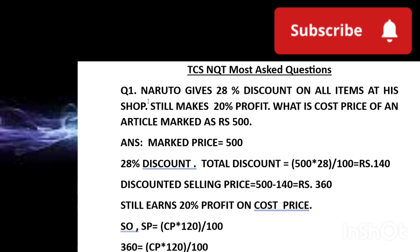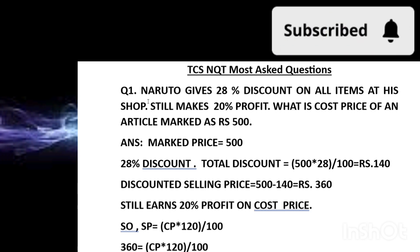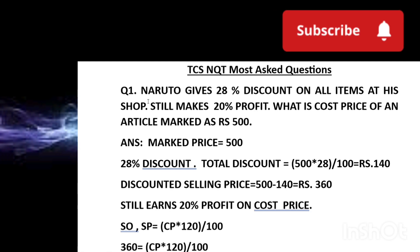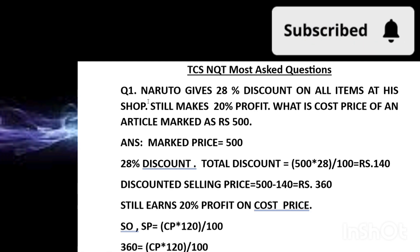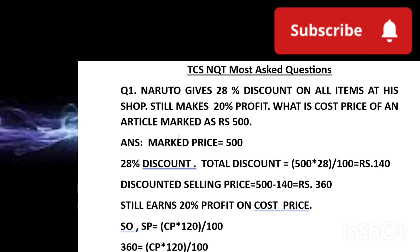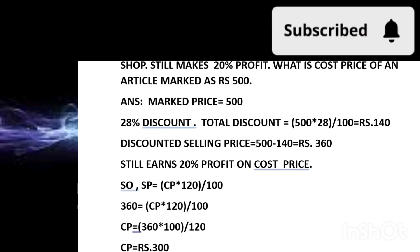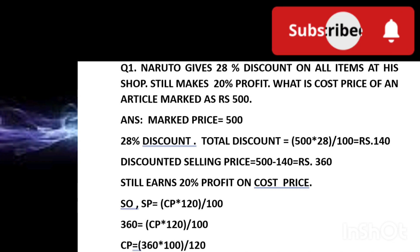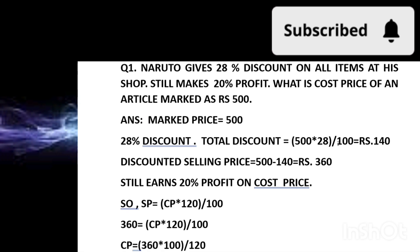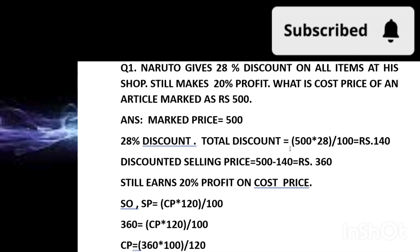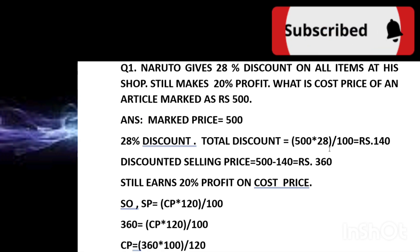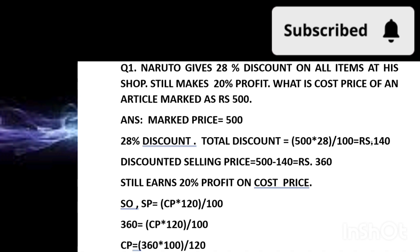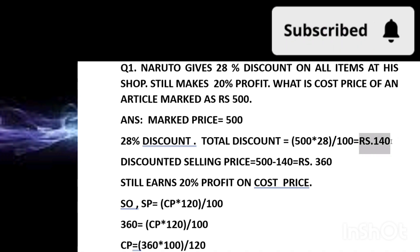Discount is calculated on marked price and profit is always calculated on cost price — remember these. The question asks: what is the cost price of an article marked at rupees 500? So the marked price is 500. There is a 28% discount on marked price, so total discount = 28% of 500 = 500 × 28/100 = 140 rupees.